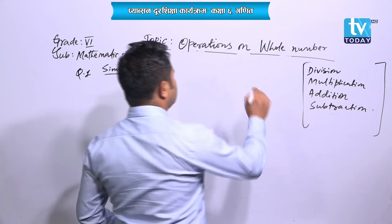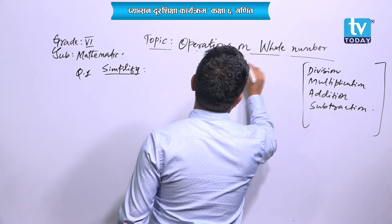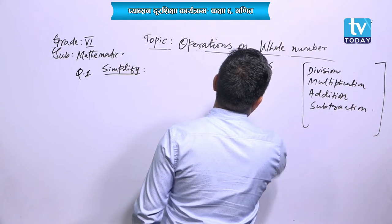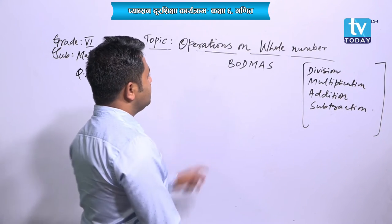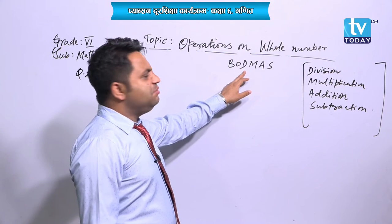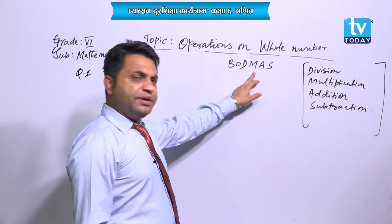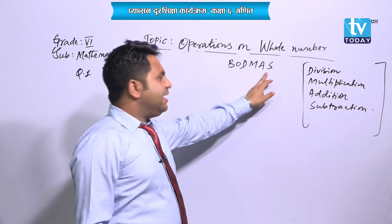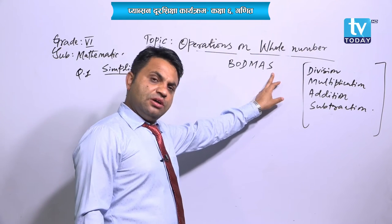There is some rule: B, O, D, M, A, S. B means Bracket, O means Of, D means Division, M means Multiplication, A means Addition, and S means Subtraction.